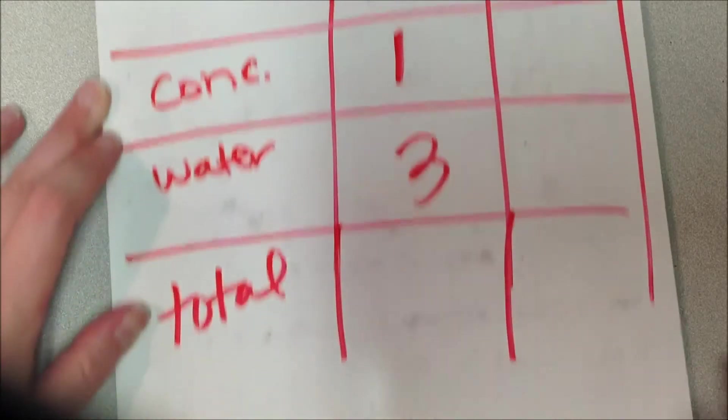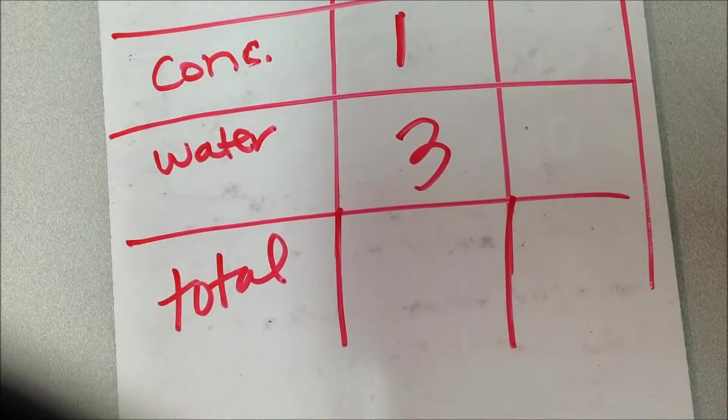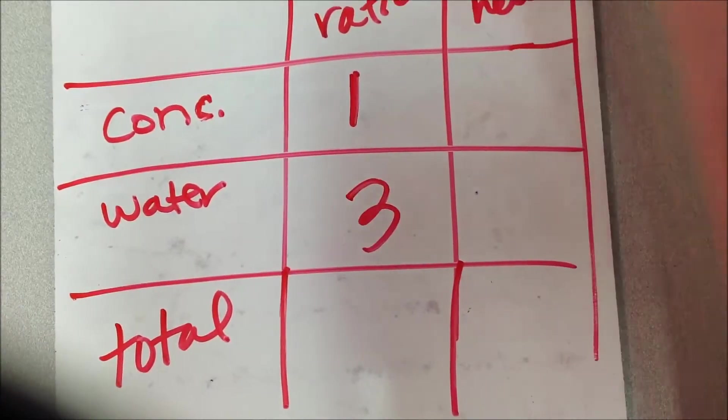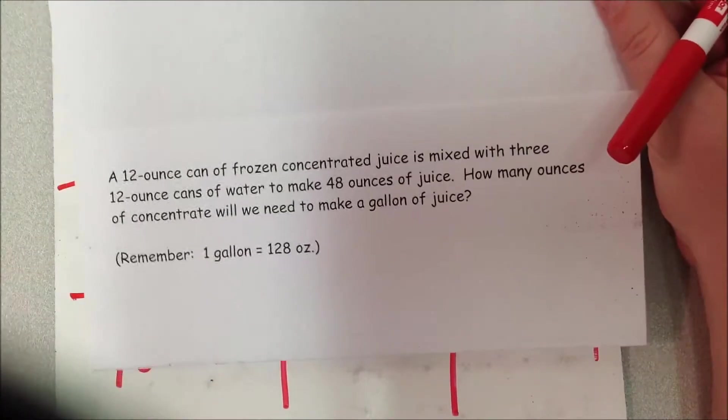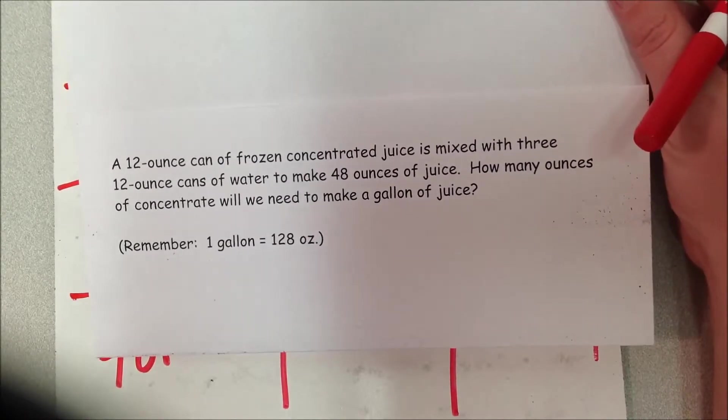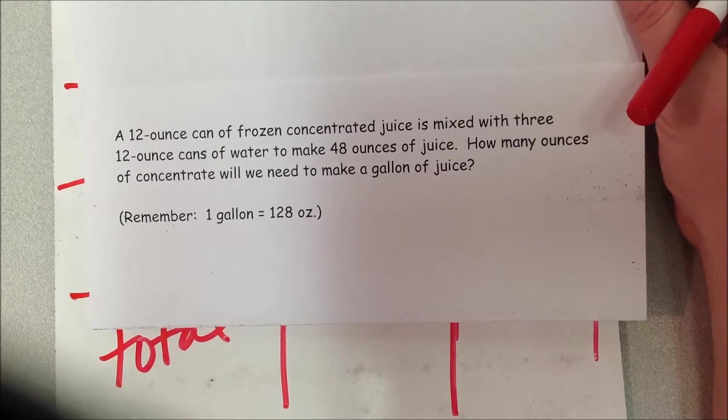This is another one where I'm going to need that total column too. When I read my question again, what they're really asking is how many ounces of concentrate will we need to make a gallon of juice. So this is that thing that I was saying...